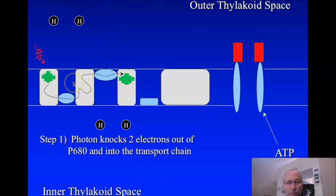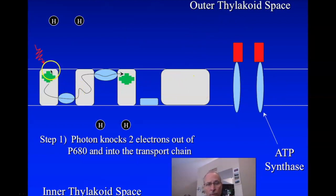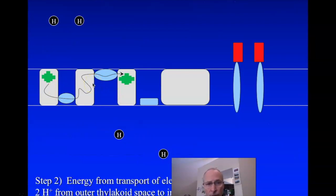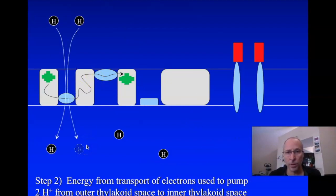But how do we make the ATP? There's an ATP synthase on the thylakoid, just like in the mitochondrion. We use the energy from the photon to pump hydrogens across this membrane using active transport against the concentration gradient. Notice we're pumping from the outside of the thylakoid to the inside — this is different from the mitochondrion, where we were pumping out. This is not a mistake; this is how nature actually functions.